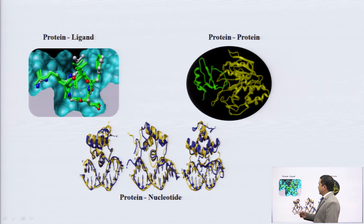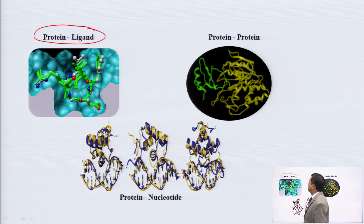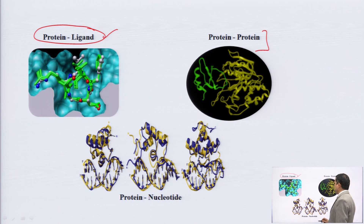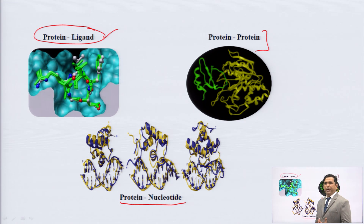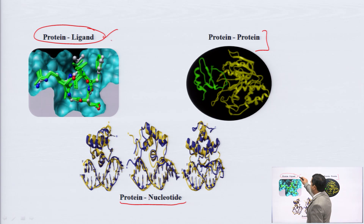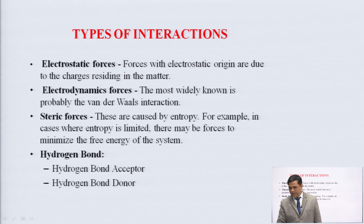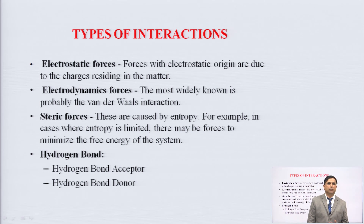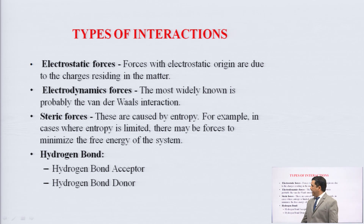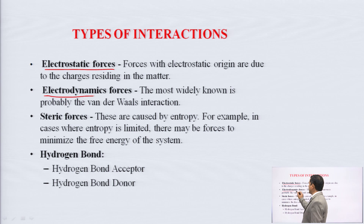The ligands may interact with proteins — that is protein-ligand interaction. There is also docking between protein-protein and between protein-nucleotide. As medicinal chemists, our main concern is the interaction of the protein with the ligand. The types of interactions that occur in ligand-receptor interaction include: electrostatic forces, electrodynamic forces, steric forces, and hydrogen bonding.